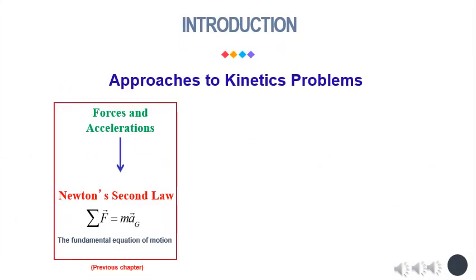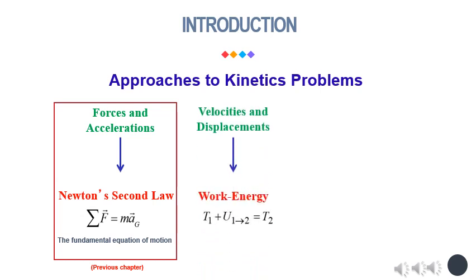In the preceding chapter, you solved problems dealing with the motion of a particle by using the fundamental equation f equals ma to determine the acceleration a. By applying the principles of kinematics, you could then use acceleration to determine velocity and displacement of the particle at any time. In this topic, we combined f equals ma and kinetic energy relationships to obtain an additional principle called the principle of work and energy. This eliminates the need to calculate the acceleration and enables you to relate the velocities of the particle at two points along its path of motion.